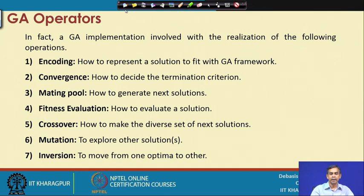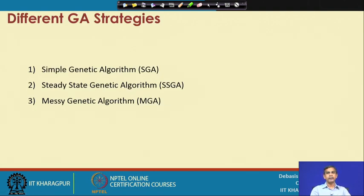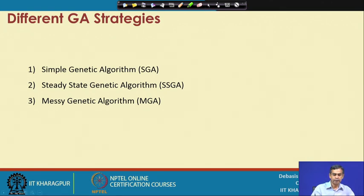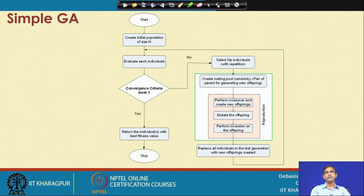We will discuss how these operators can be realized in terms of simple problems. Before going to the actual learning of different operators, there are a few strategies for GA. One is called Simple GA (SGA), another is called Steady State GA (SSGA), and there is also the Messy Genetic Algorithm. In this lecture, we will limit our discussion to the first two: SGA and SSGA, which are the most widely followed strategies.